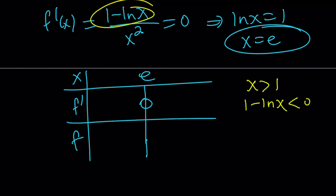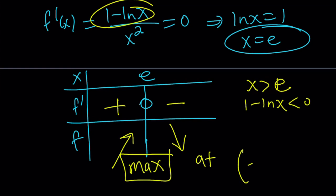Sorry. If x is greater than e, then ln x is going to be greater than 1 and it's going to be negative. So we have a negative here and a positive here, which means our function is going to be increasing and then decreasing, which means it has a max at x equals e, but to be more specific, max at e comma 1 over e. That is the f of e. Make sense?